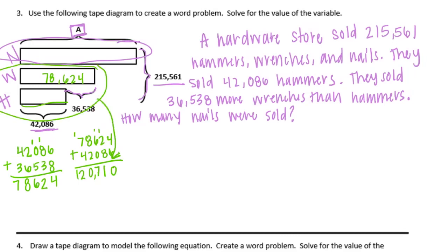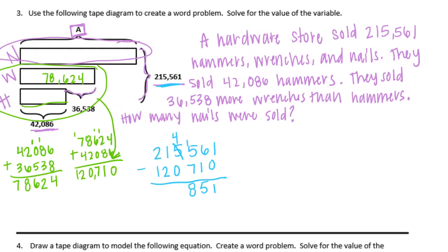Now subtract hammers and wrenches from the total to find nails: 215,561 minus 120,710. One minus 0 is 1; 6 minus 1 is 5; 15 minus 7 is 8; 4 minus 0 is 4; 11 minus 2 is 9; 1 minus 1 is 0 — giving 94,851 nails.